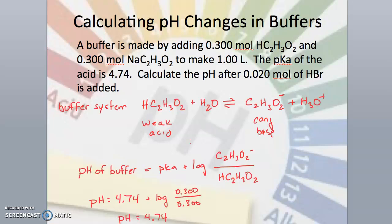The buffer system is the weak acid, it is HC2H3O2, this is acetic acid, and the salt of the conjugate base is sodium acetate. This question does not ask for a pH change, but I am going to calculate an initial pH before any acid is added, using the Henderson-Hasselbalch equation.